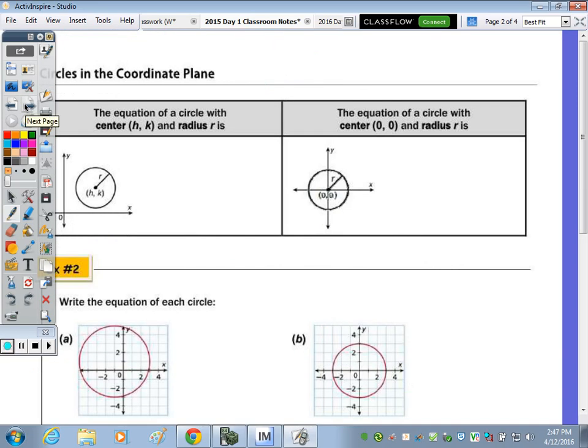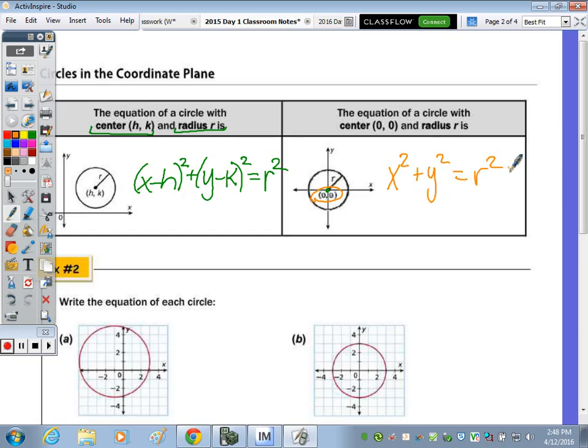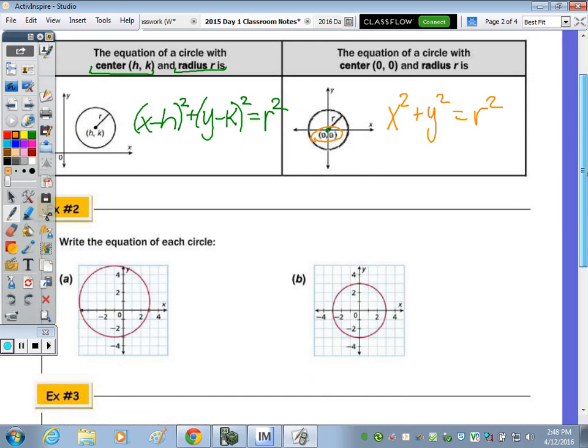So now circles. In order to write the equation of a circle, you need to be given the center and the radius. So given center H,K and given radius R, this is the equation. So it's X minus H squared plus Y minus K squared equals R squared. But when your center is at 0, 0, and you're subtracting 0, what's X minus 0? X, Y minus 0, Y. Your equation when your center is right at the origin is just X squared plus Y squared equals R squared. Because there's nothing to subtract from the X value or Y value. So for question 2, go ahead and note your center and radius for each circle.